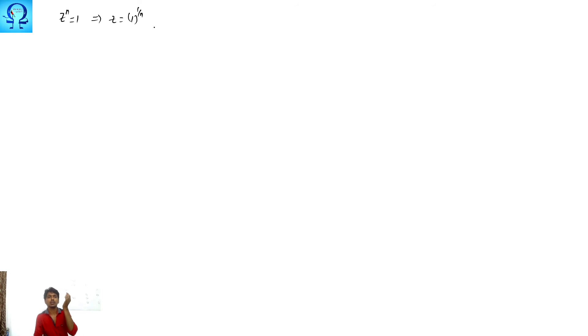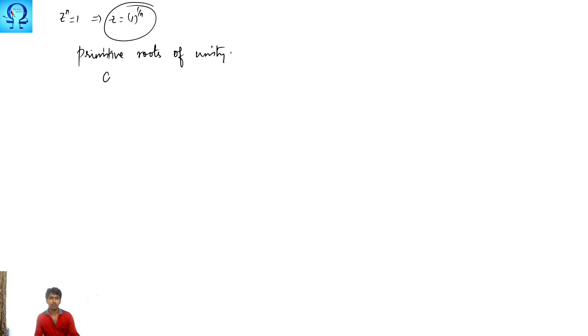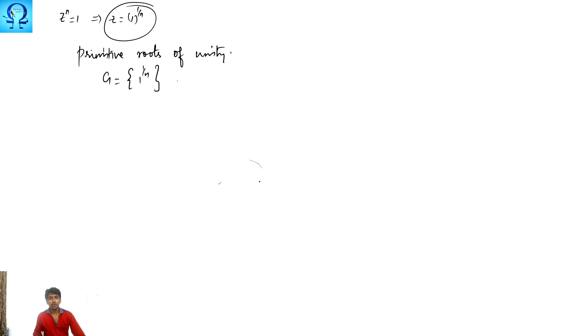When discussing nth roots of unity, you can write z as 1 to the power 1/n, giving n different values. These form a group called the primitive roots of unity. If you are given a set G which is the collection of 1 to the power 1/n for any n, you need to identify the number of distinct elements in this group.